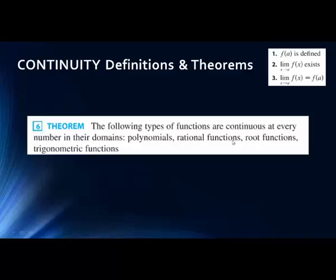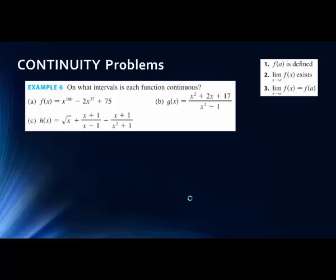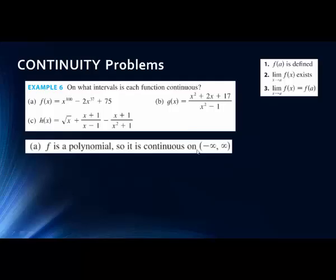Let's look at some problems. On what intervals is each function continuous? For part A, it's a polynomial, and polynomials are continuous over all values of x. We can plug any value of x in and get a continuous function. So A is continuous on all of negative infinity to infinity — and remember, this is interval notation, not an xy point.